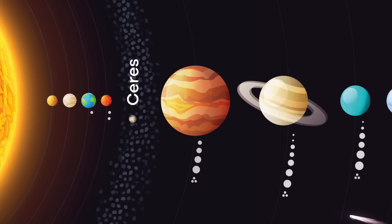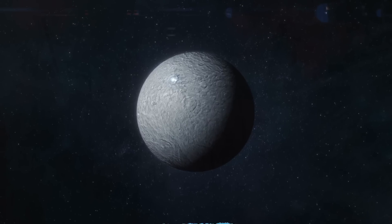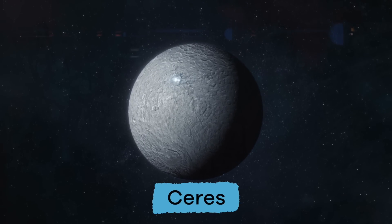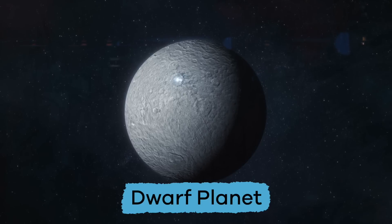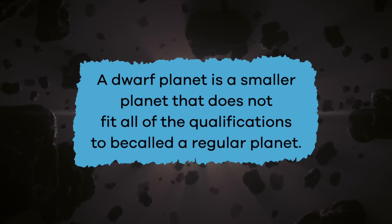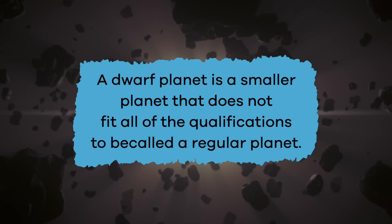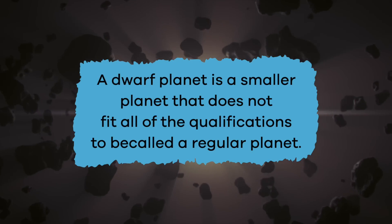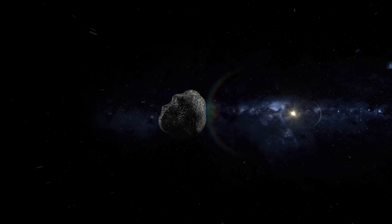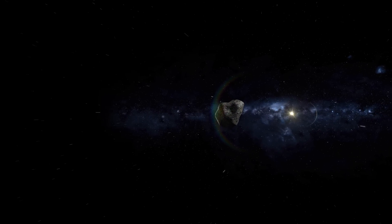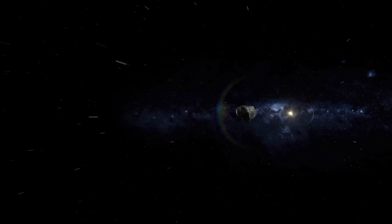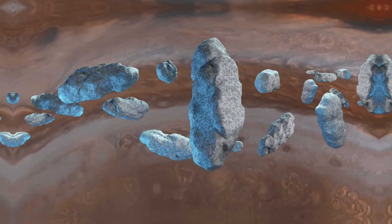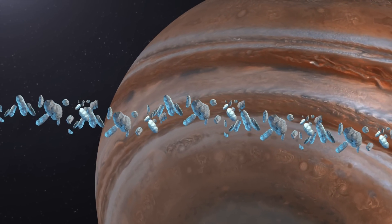Ceres is the largest asteroid in the asteroid belt and is also thought to be the biggest asteroid in our solar system. Because it is so big, scientists decided to call it a dwarf planet. A dwarf planet is a smaller planet that does not fit all the qualifications to be called a regular planet. Sometimes an asteroid leaves the asteroid belt and gets caught up in a planet's orbit. These are called Trojan asteroids. There are thousands of Trojan asteroids that share Jupiter's orbit around the sun.